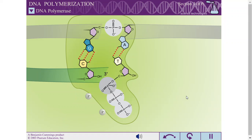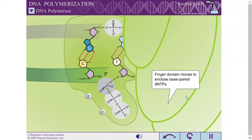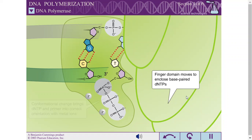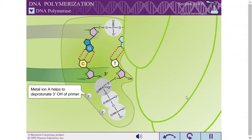Once a correct base pair is formed between the incoming dNTP and the template, the finger domain moves to enclose the dNTP. This conformational change brings the divalent metal ions into the correct positions to function. Metal ion A helps to deprotonate the three-prime hydroxyl of the primer, producing an oxyanion to attack the alpha phosphate of the incoming dNTP.